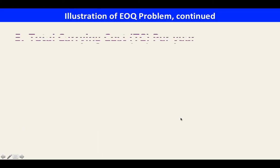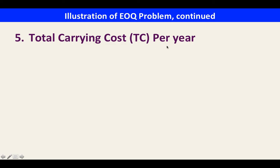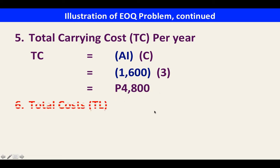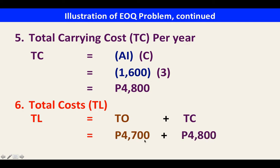The total carrying cost per year is: average inventory × carrying cost = 1,600 units × 3 = 4,800.